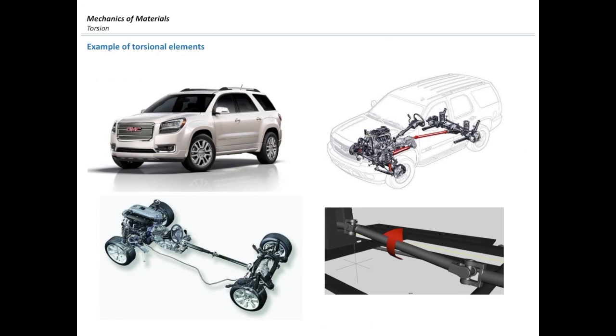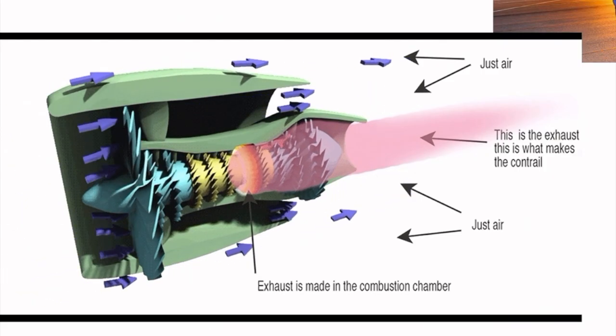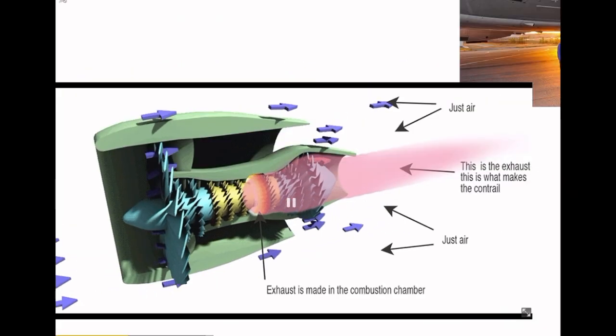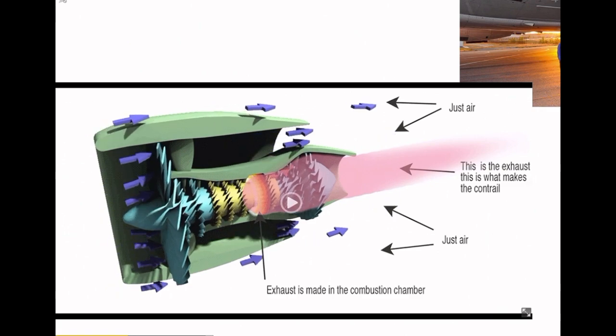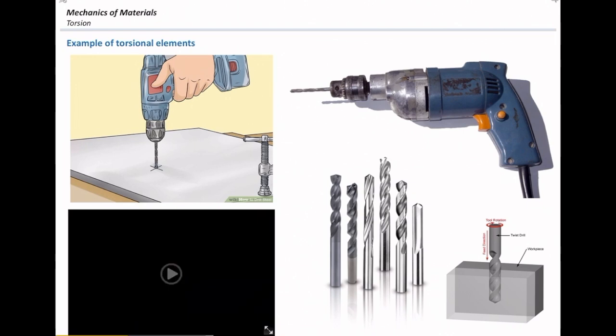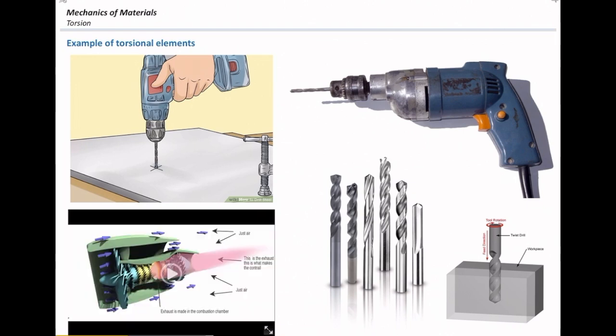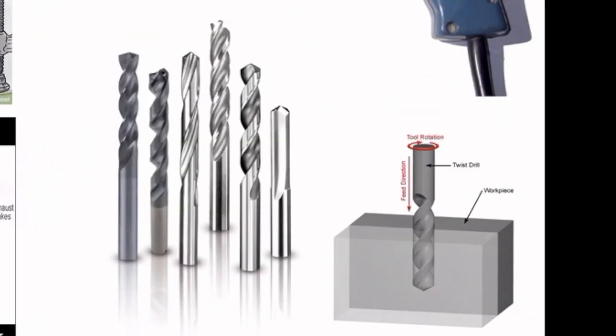Let me show you another example. Once the engine is rotating, as you can see, the middle shaft is subjected to a torque. Another example is a drilling shaft, which is something that many of you have used. A drilling shaft is another example of a torsional element. This part gets the power from the drilling shaft and transmits it all the way to the body that we want to drill a hole in.